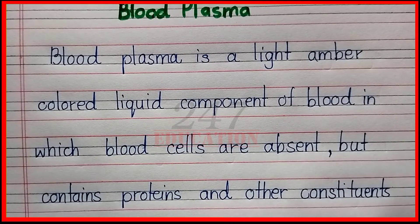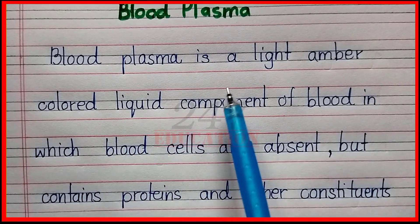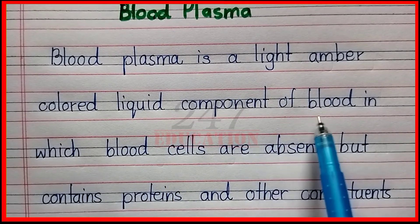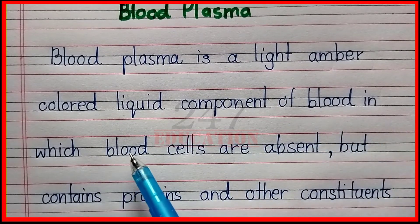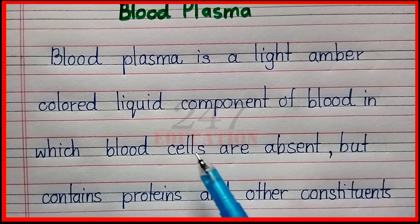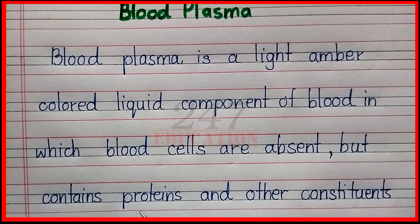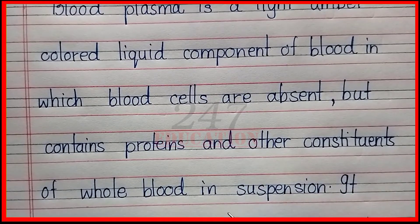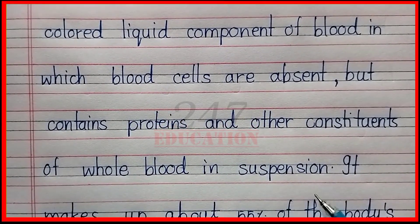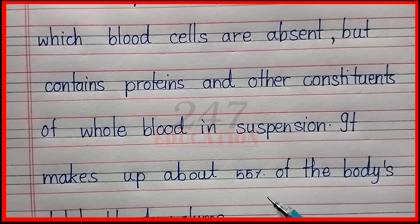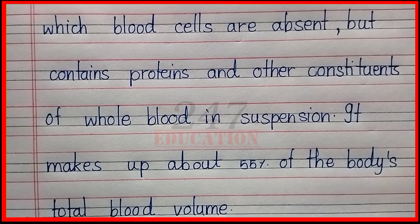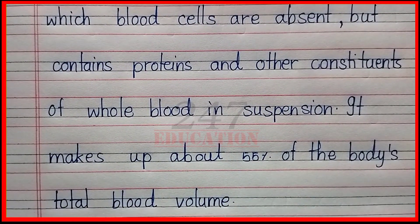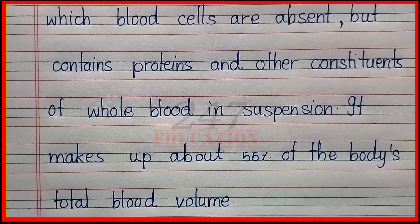Blood plasma is a light amber colored liquid component of blood in which blood cells are absent but contains proteins and other constituents of whole blood in suspension. It makes up about 55% of the body's total blood volume.